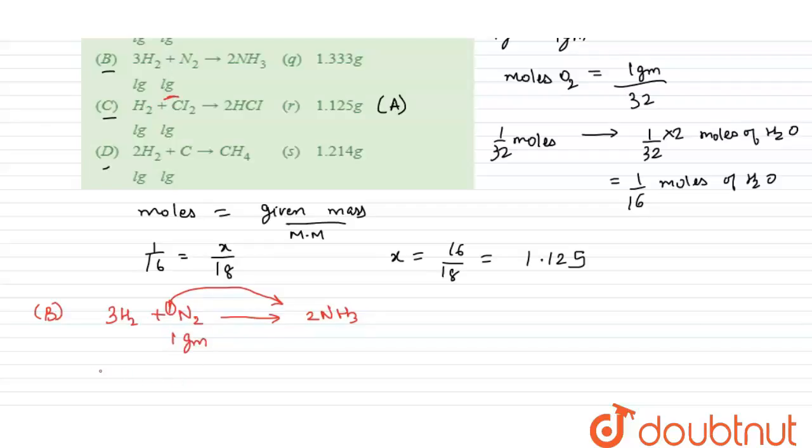We will find the moles for N2 that comes out to be 1 upon 28. If 1 mole of N2 gives 2 moles of NH3, then 1 by 28 moles of N2 will give 2 into 1 by 28 moles of NH3, which equals 1 by 14.